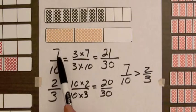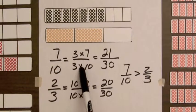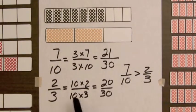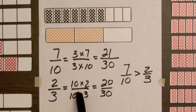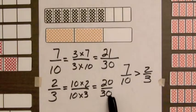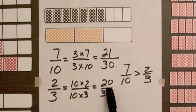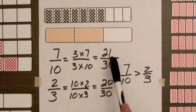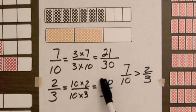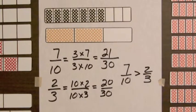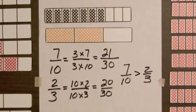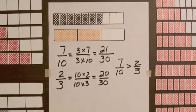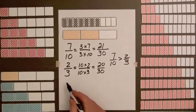We multiplied the 7 and the 10 by 3 to get 21 over 30. We multiplied the 2 and the 3 by 10 to get 20 over 30. And then we didn't need to look at these denominators which are the same, we only need to compare the two numerators to see that 7 over 10 was greater than 2 over 3. Now this process can be shortened in the following way.